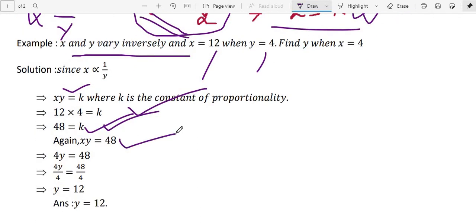So second time, you are asked to find Y when X equal to 4. So Y is not given, X is given 4. 4Y equal to 48. So you need the value of Y. So 4Y divided by 4, 48 also divided by 4. So Y equal to 12.